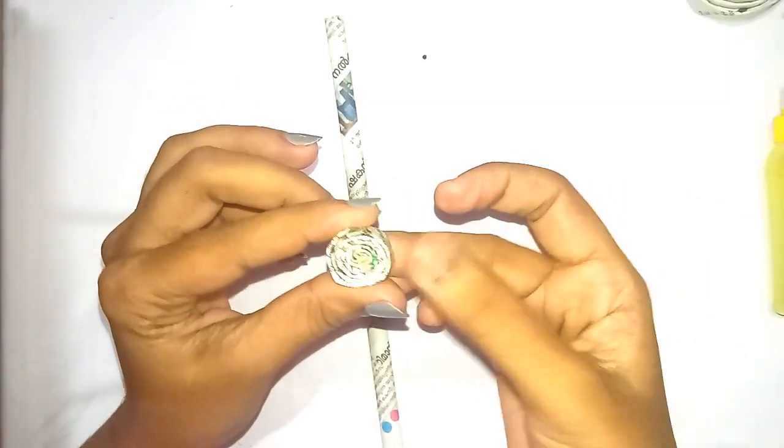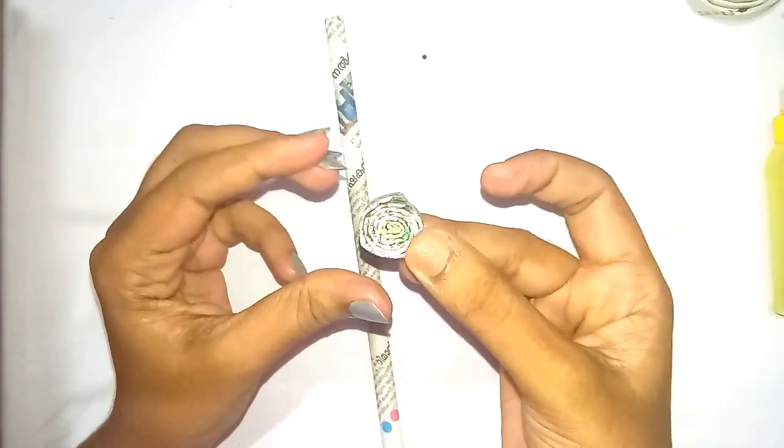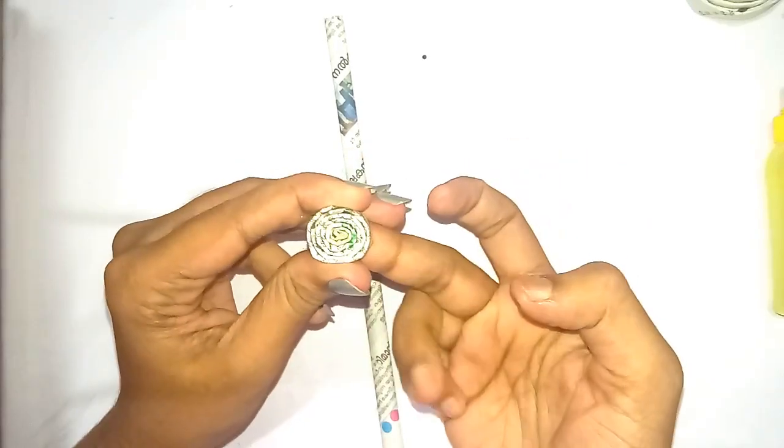The small paper reel is ready. Again, do the same with the second half of the paper tube.